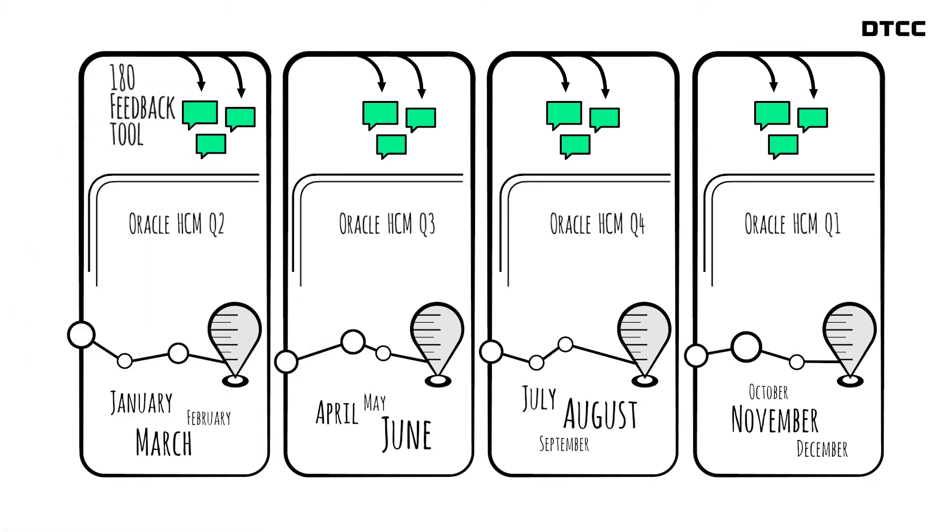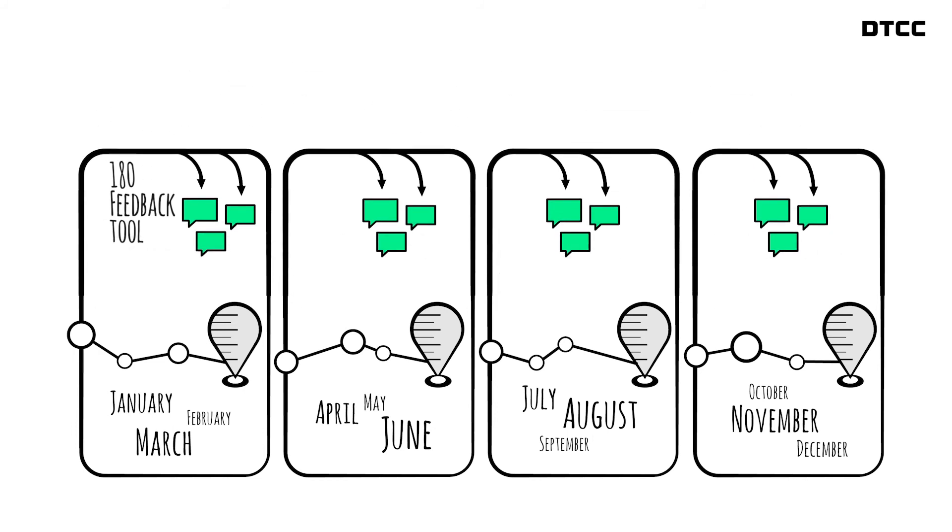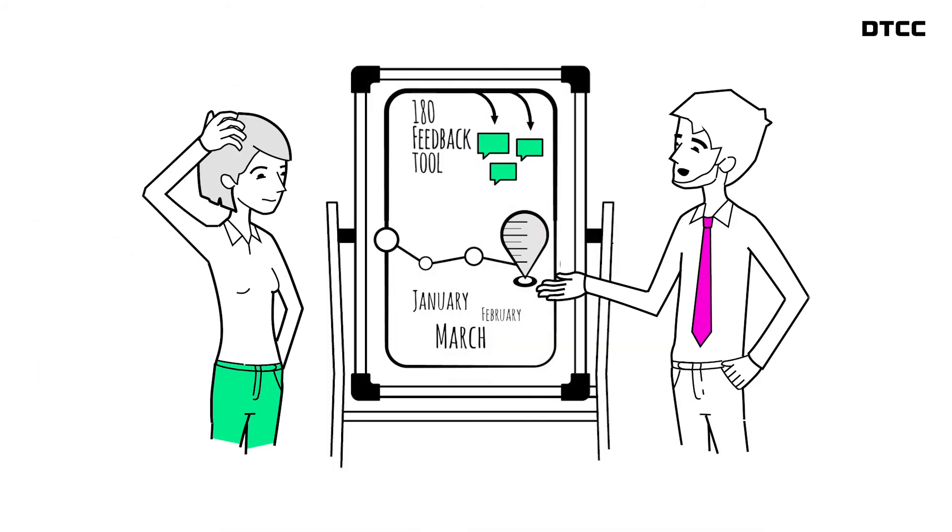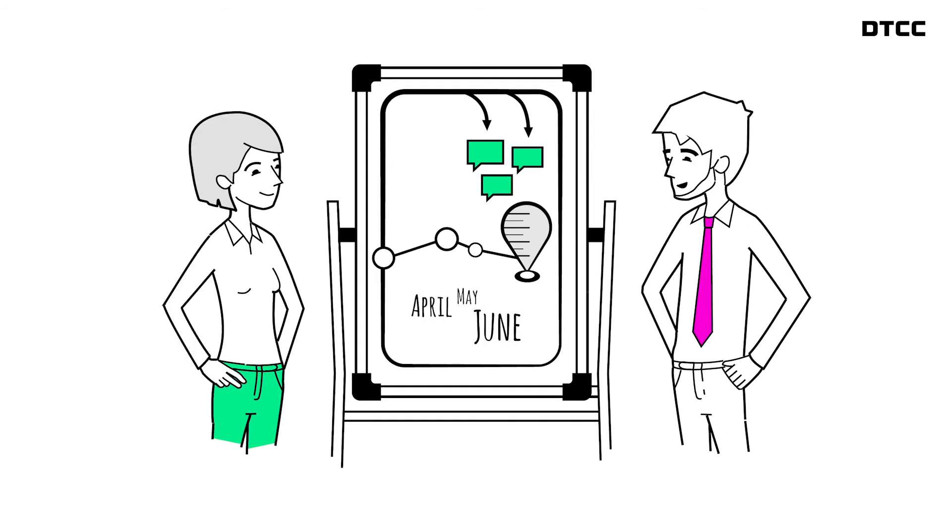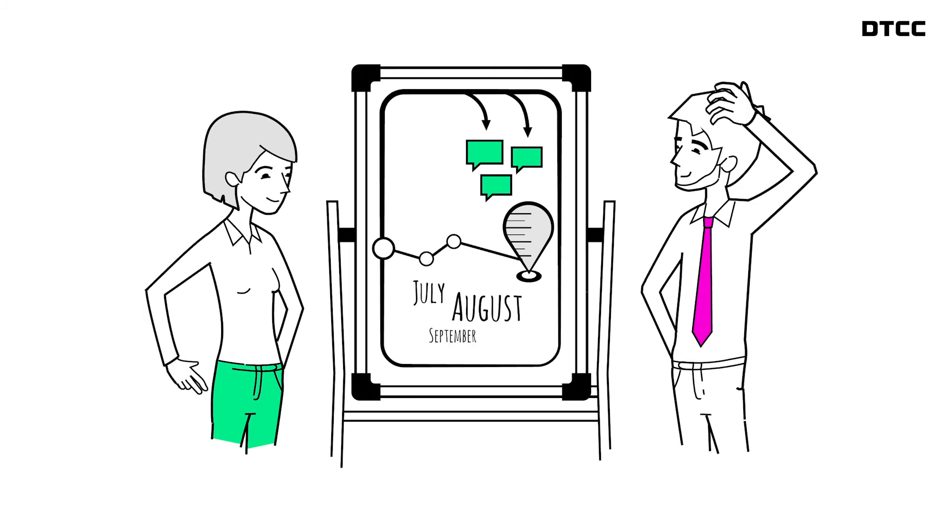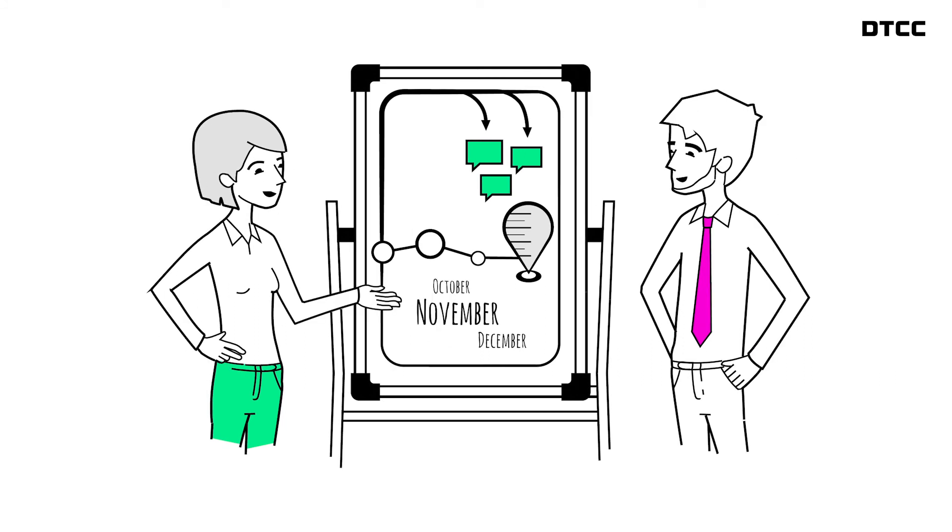The 180 feedback tool in HCM makes collecting feedback easy. Have a conversation with your manager about how you're doing and what support you need to grow. Here's a hint. Use the feedback you receive and your OKR progress to guide this conversation.